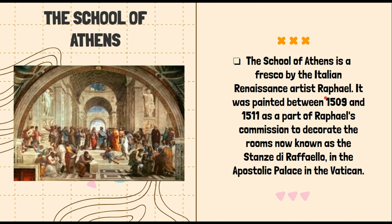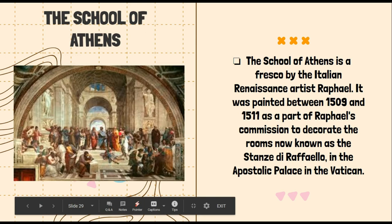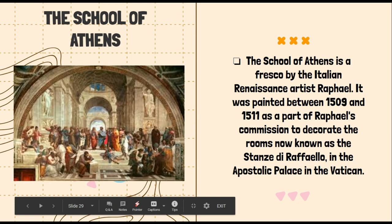The School of Athens is a fresco by Raphael, painted between 1509 and 1511. It was made to decorate the room now known as the Stanza di Raffaello in the Apostolic Palace in the Vatican. You can see various philosophers like Aristotle and Pythagoras, talking and reading books about philosophy. You can also notice the highly detailed sculptures and the mathematical cross-shaped architectural design mixed into the artwork.